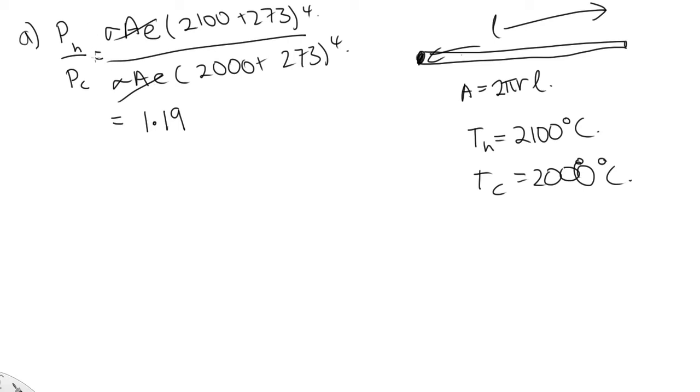So the hotter one emits 1.19 times as much power as the colder one. Now in part B, we were told we want to keep the temperatures the same and change R.